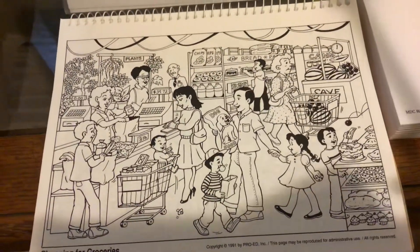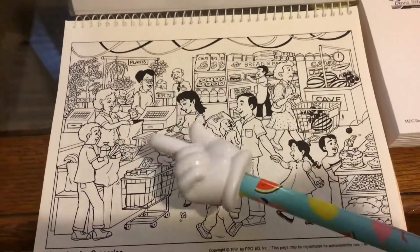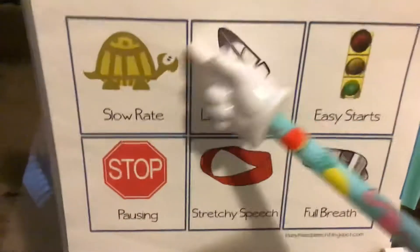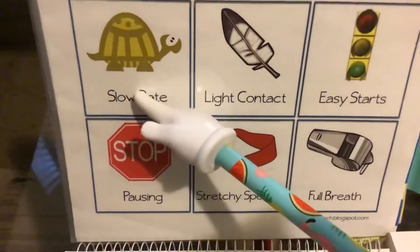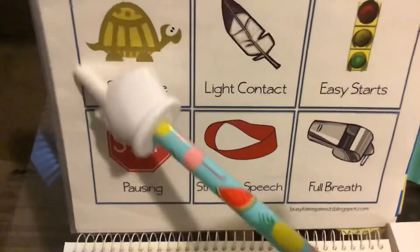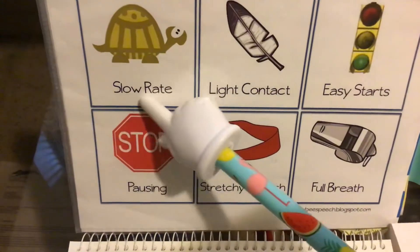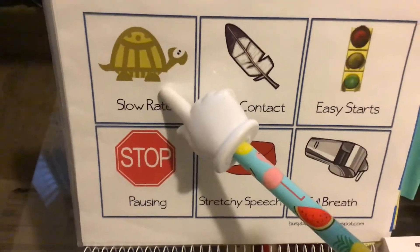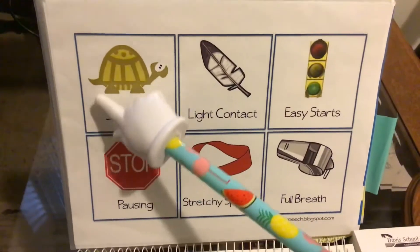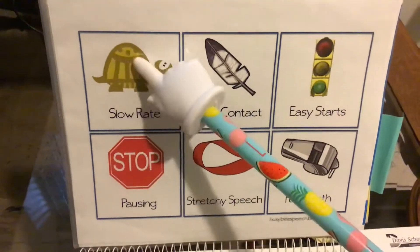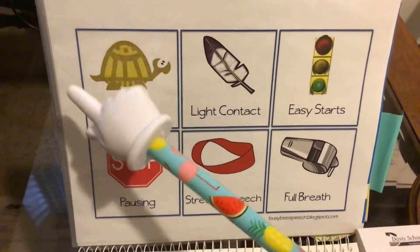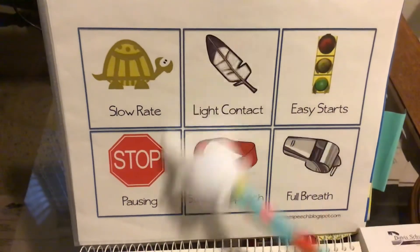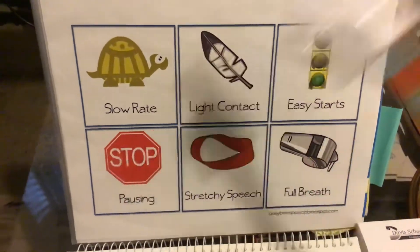All right. I hope you enjoyed today's session. Today we worked on slow rate — turtle. When you see or hear slow rate, think about talking like a turtle, where every syllable is nice and slow and smooth. See you next time.